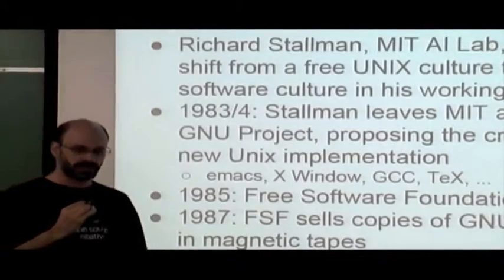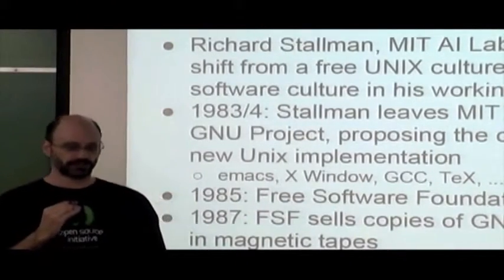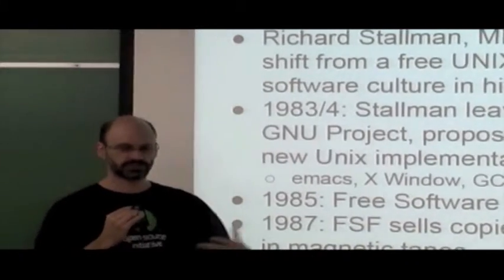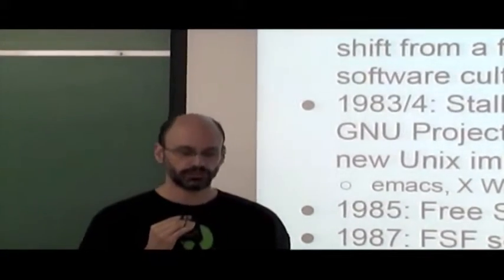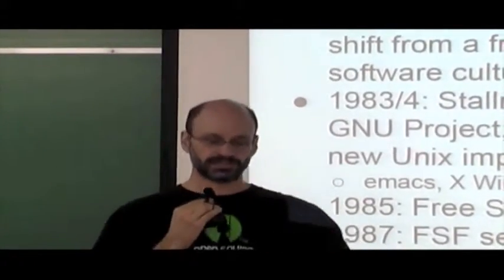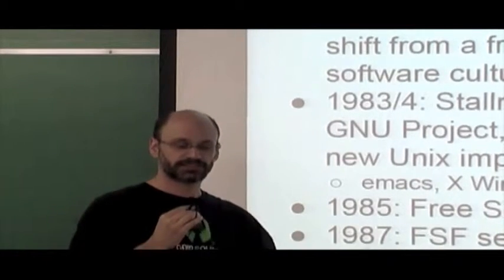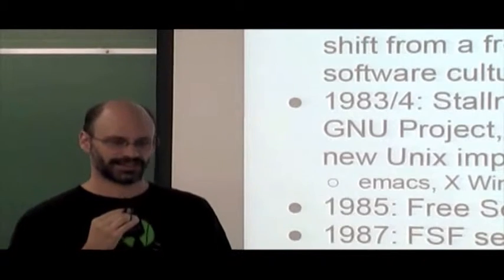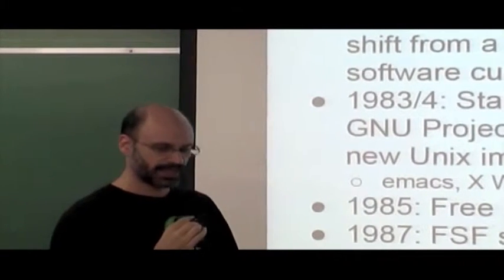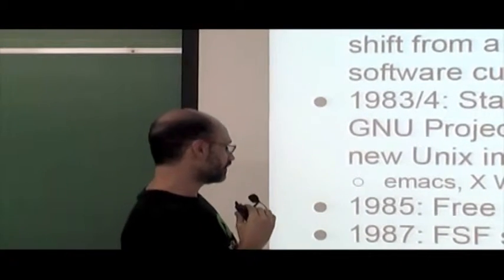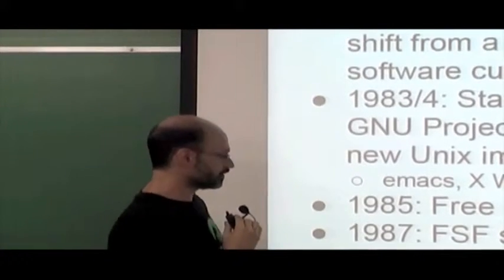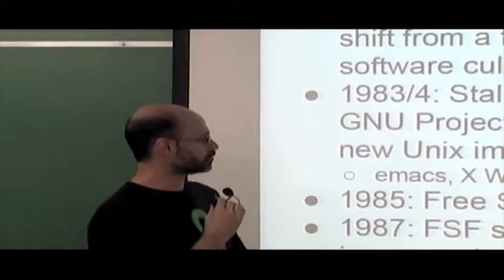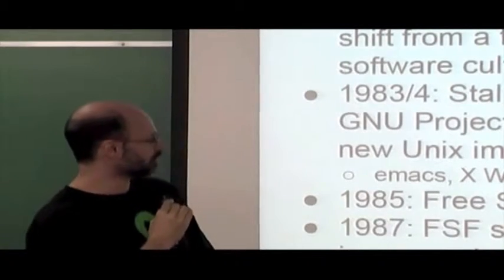In 1985, Stallman founded the Free Software Foundation. By 1987, the FSF was selling copies of the GNU system for around $150 on magnetic tapes to fund the Free Software cause. In 1989, he established the ideas of Copyleft and wrote the first version of the GPL.